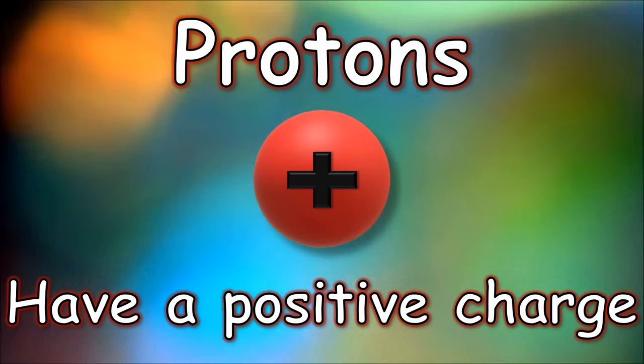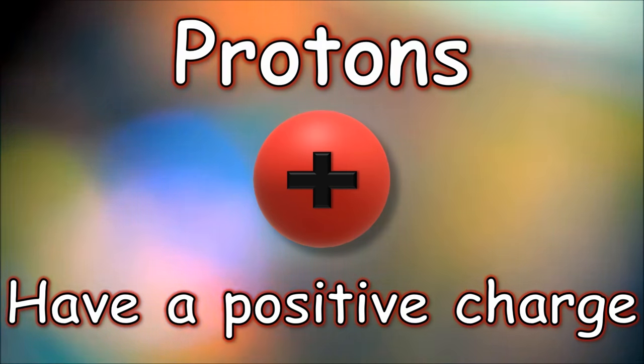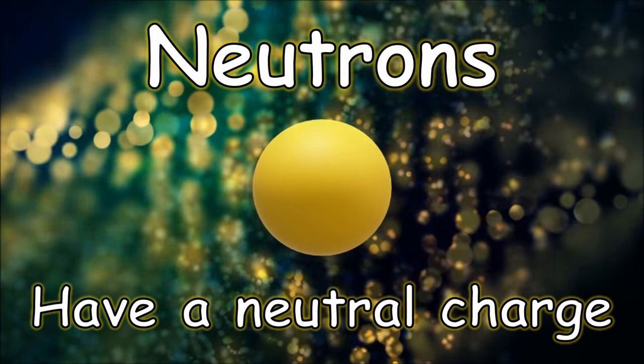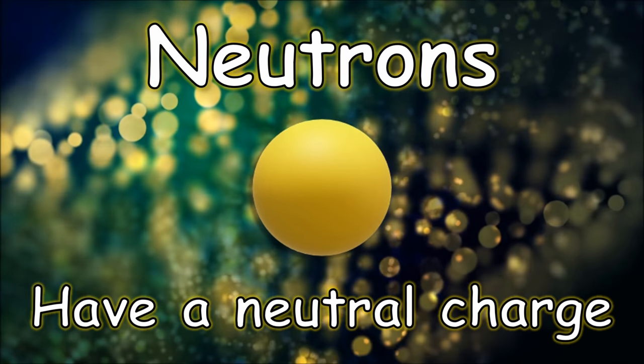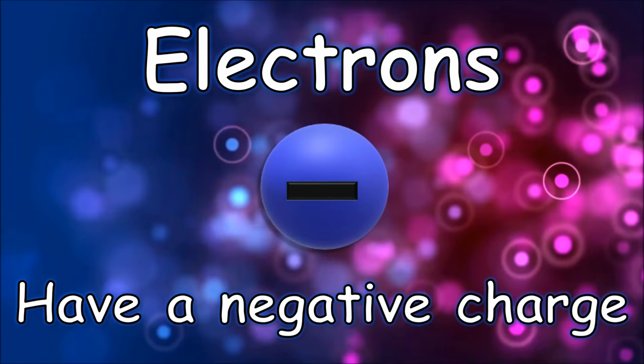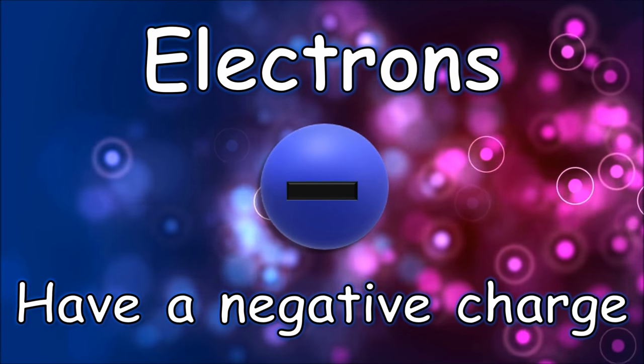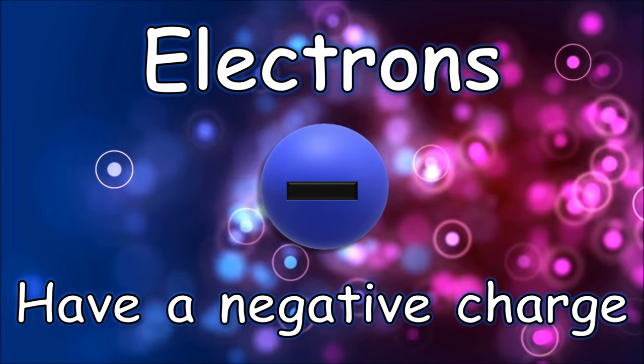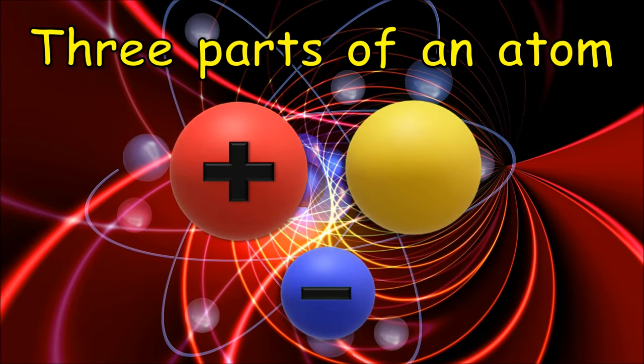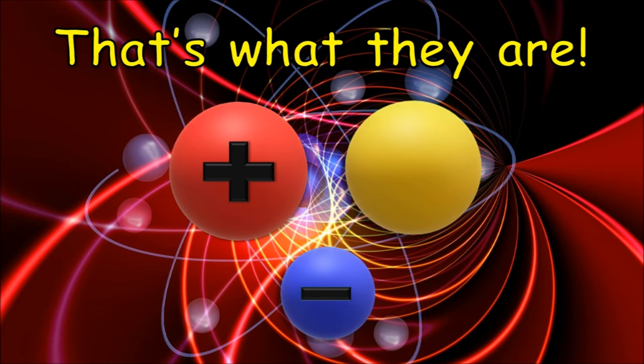Protons have a positive charge. Neutrons have a neutral charge. Electrons have a negative charge. Three parts of an atom — that's what they are!